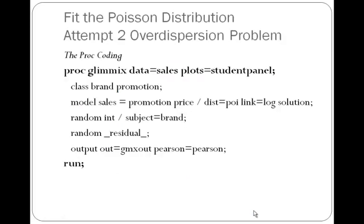In attempt number two, I took the overdispersion problem into account. The coding for the procedure in SAS is pretty much the same as in attempt number one, except that I include in the random statement a residual variation term. All other statements are the same — I ask for the output as well as the predicted values. This coding takes the overdispersion problem into consideration.